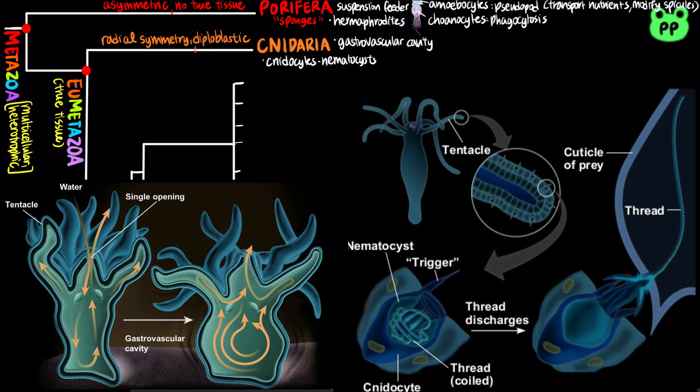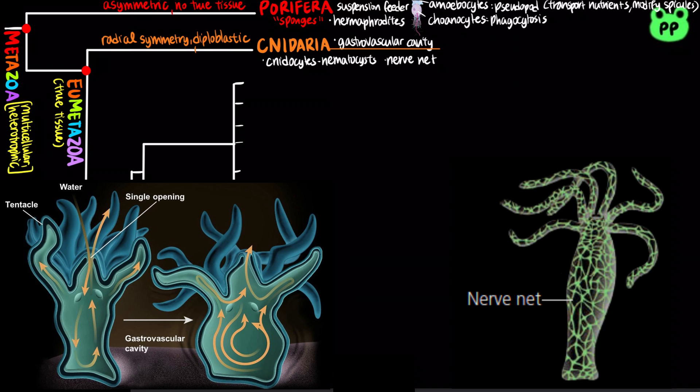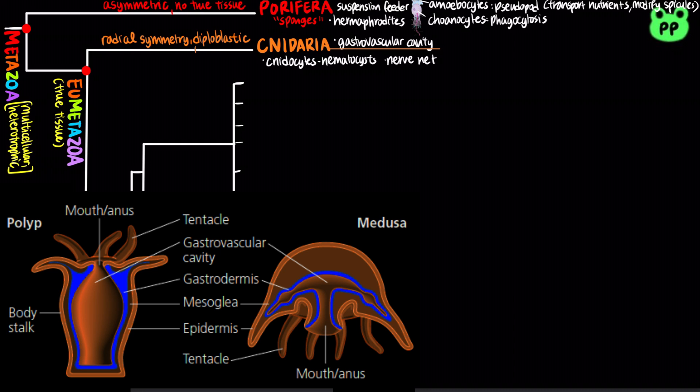Cnidarians have a simple nervous system known as a nerve net, which consists of interconnected neurons that lack a brain. Cnidarians have two variations on the body plan: the sessile polyp and the motile medusa.